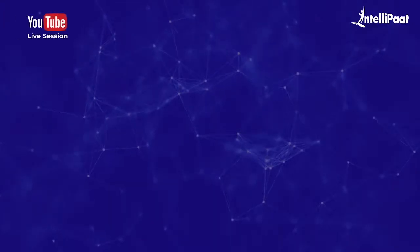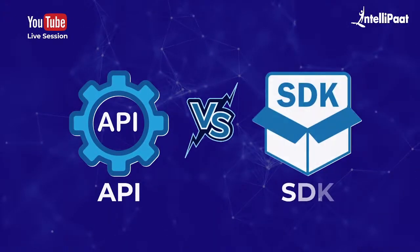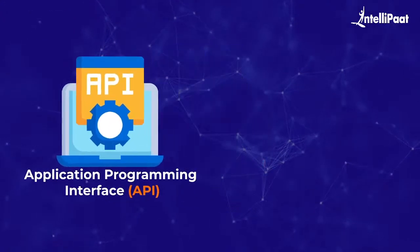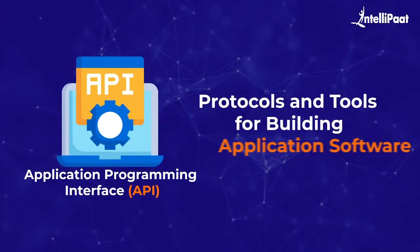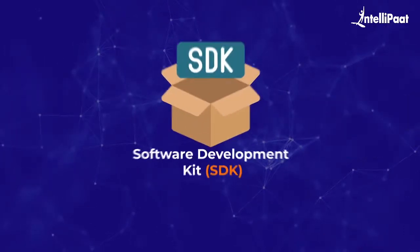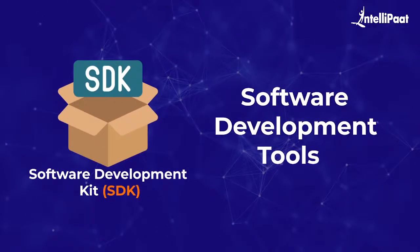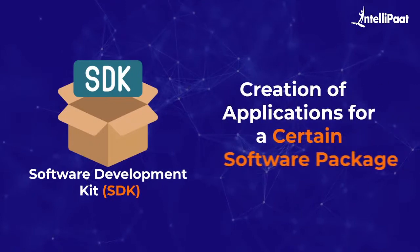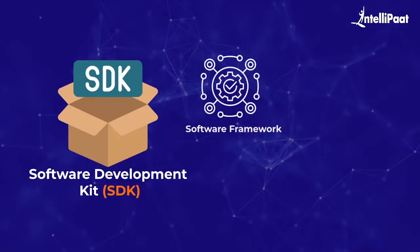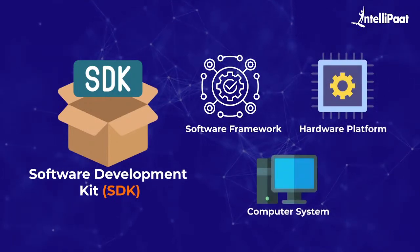Hello everyone and welcome to today's session on API vs SDK. An application programming interface is a set of protocols and tools for building application software. A software development kit is a set of software development tools that allows the creation of applications for a certain software package, software framework, hardware platform, computer system, etc.